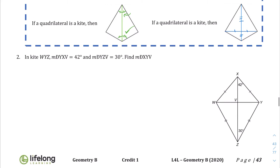Let's use what we know about kites. In question number two, in kite XYV, angle XYV is 42 degrees — so this angle right here is 42 degrees. And angle YZV is 30 degrees. Find angle XYV and angle YXV.